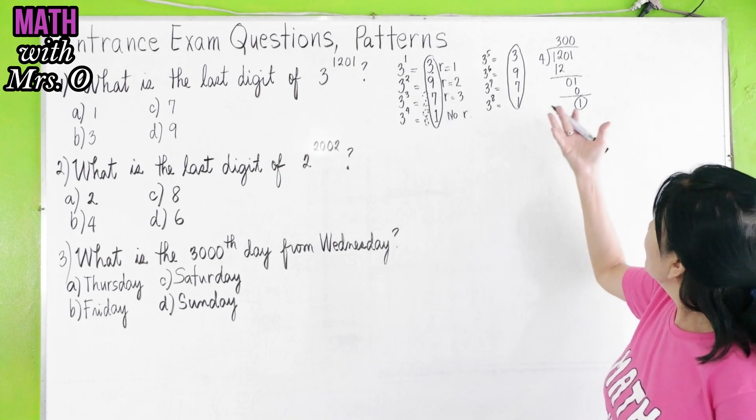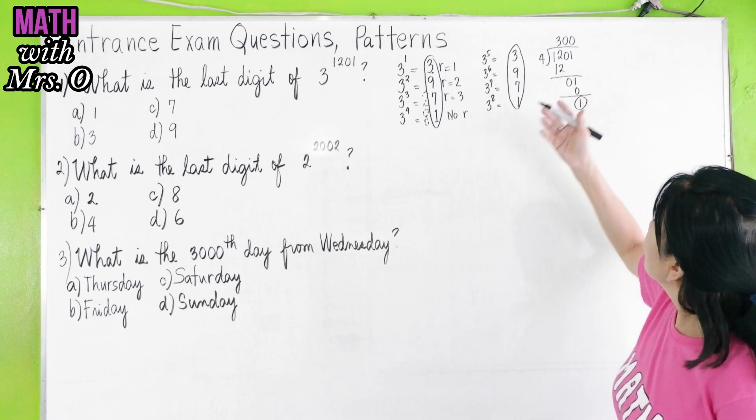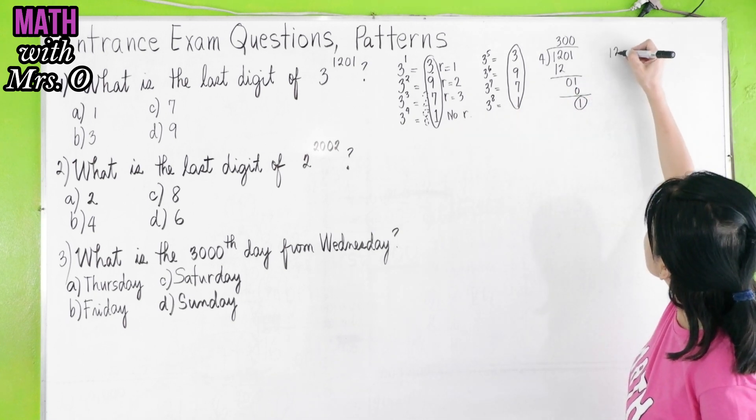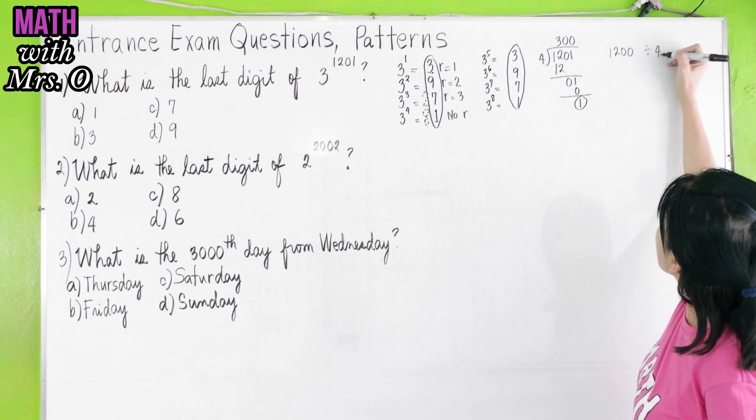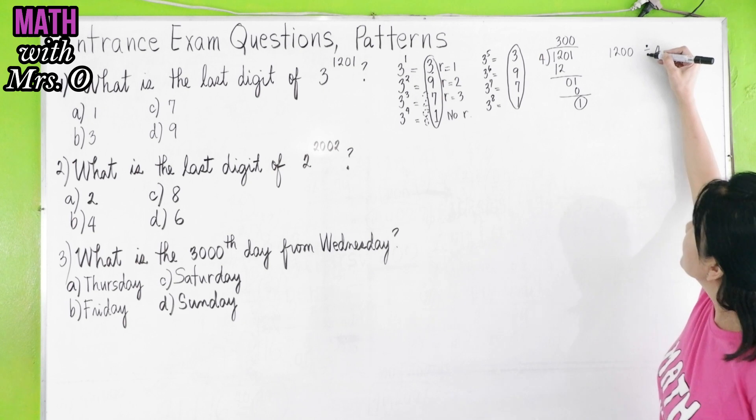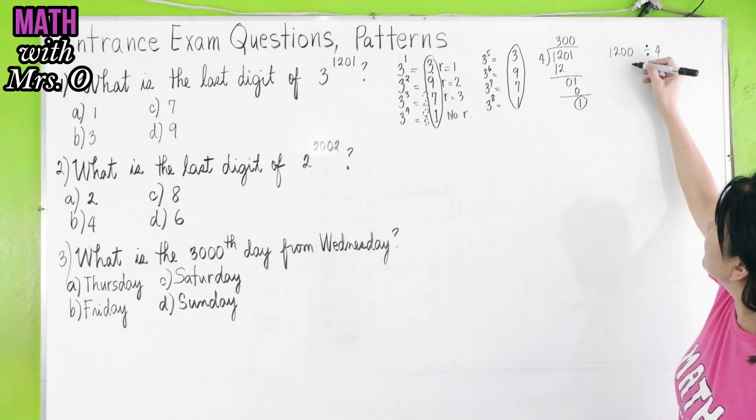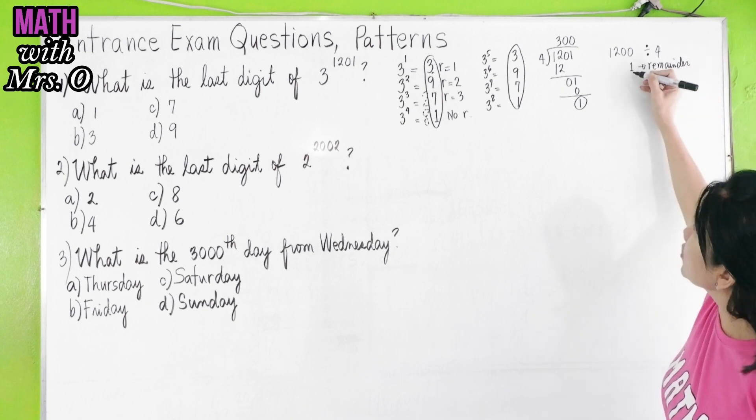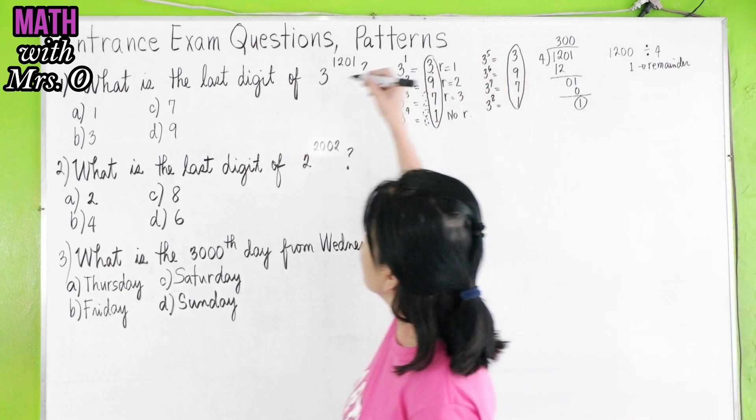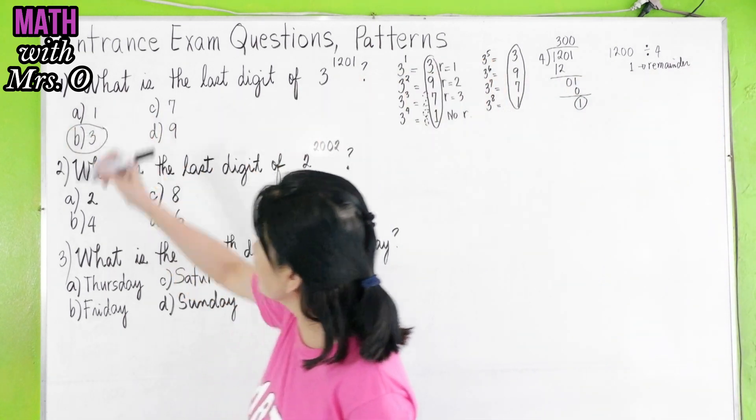You can also take a shortcut here. Remember, 1,200 is divisible by 4. Therefore, obviously, your remainder is 1. If the remainder is 1, your last digit is 3. So our answer is letter B.